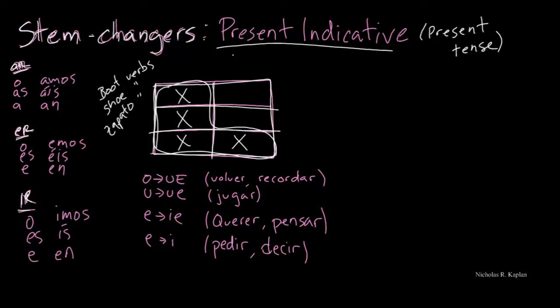Well, what kind of changes do we have? Well, in our verbs, it'll either change from an O to a UE, a U to a UE, E to IE, or E to I. And right here, we have a few examples of stem changers.